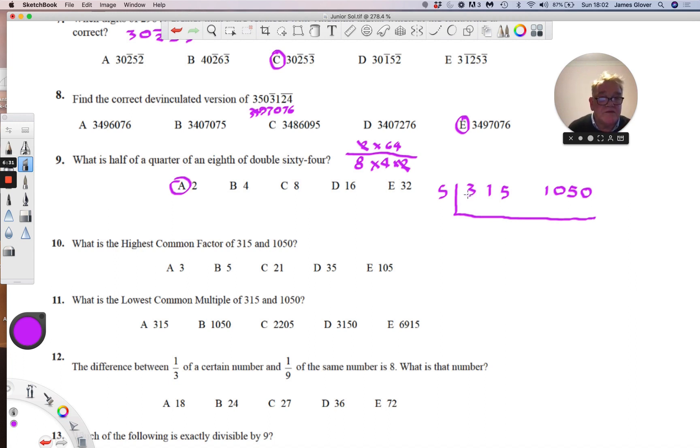5 into 315 goes 63. 5 into 10 goes 2, 5 into 5 goes 1, and we've got 210.